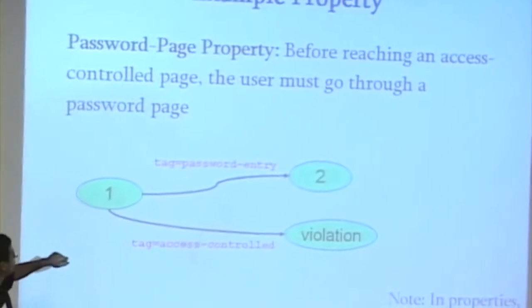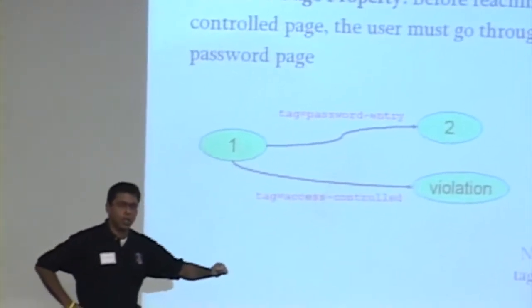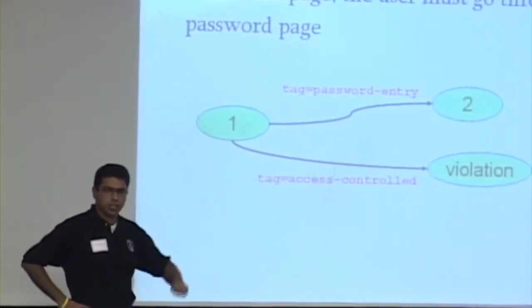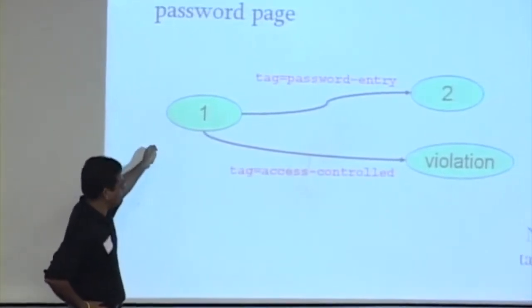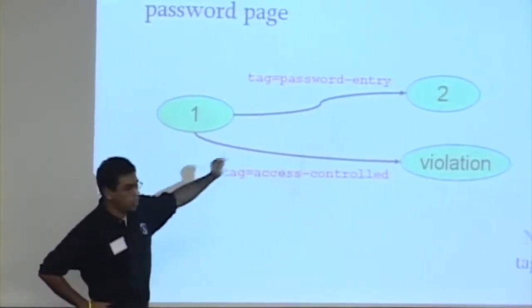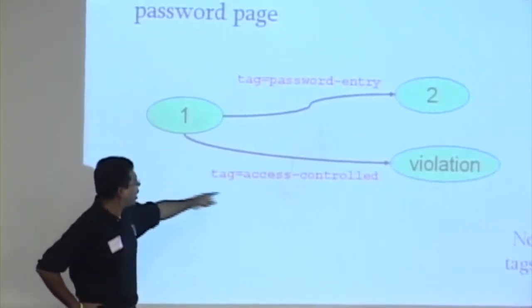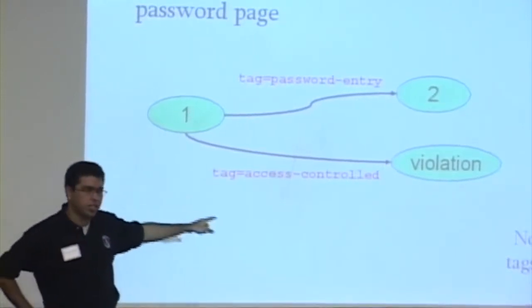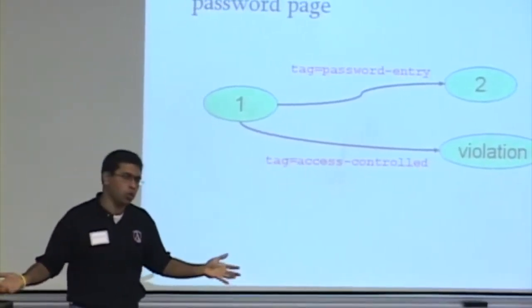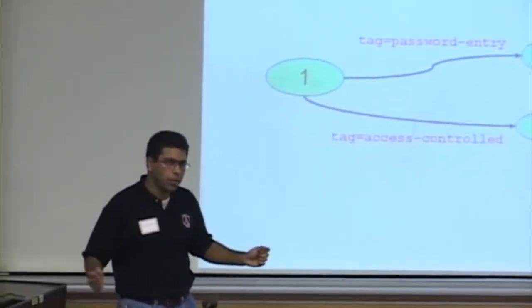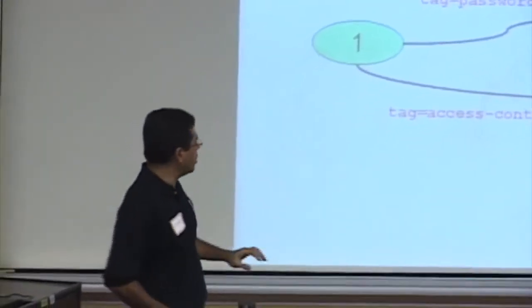So, for example, if you want to say you have to go through a password entry page, otherwise you don't get access to the site, you might have some start node over here. You can go to node 2. If you don't see the password entry tag, you get to the access control part of the site. You're now in violation and you can report this as a failure of the system. So, these are simple automata.